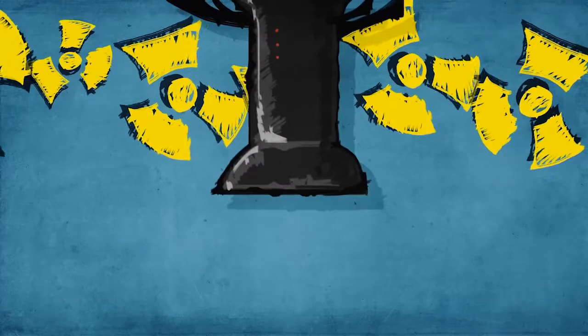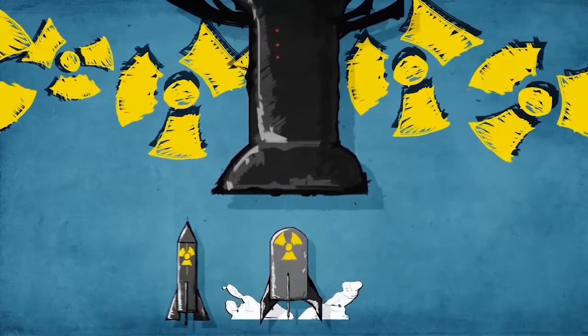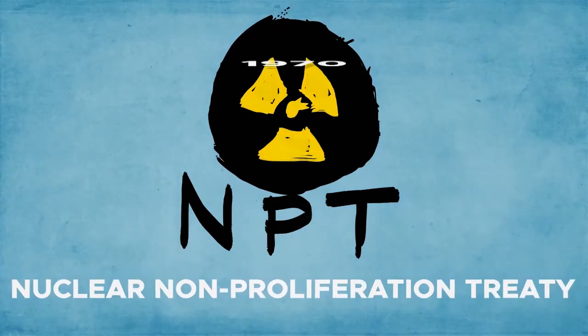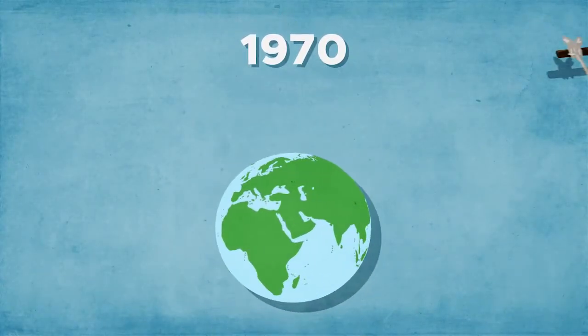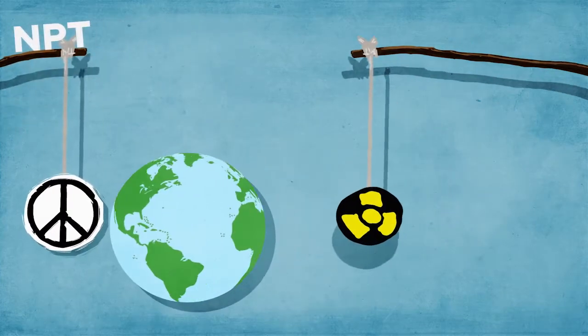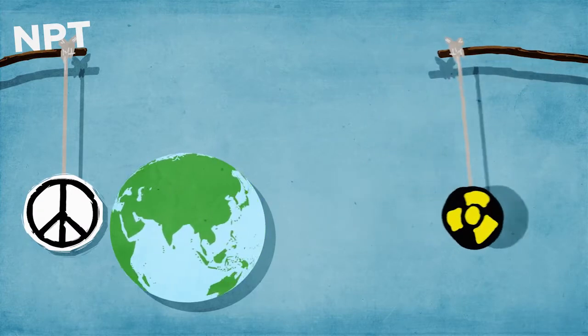The agreement that keeps countries from developing these destructive weapons is the Nuclear Non-Proliferation Treaty. It became effective in 1970 and has provided strong incentives for nations to give up their nuclear weapons programs or not pursue them in the first place.